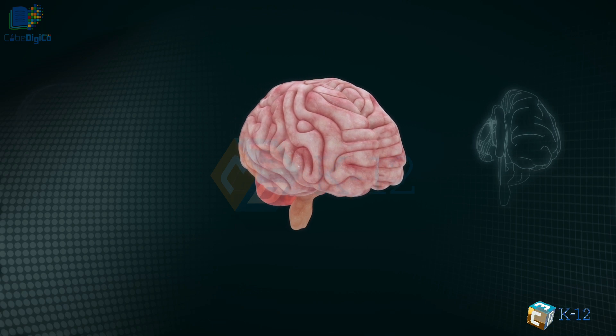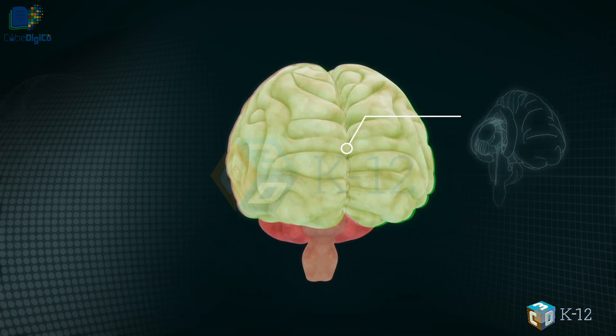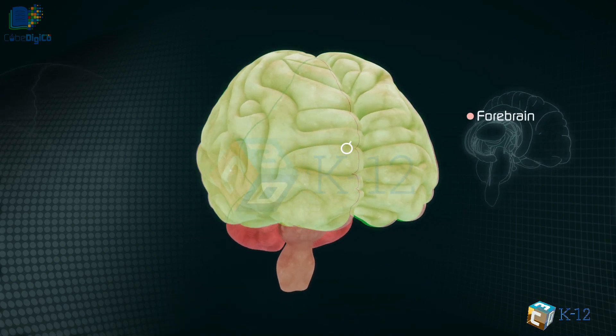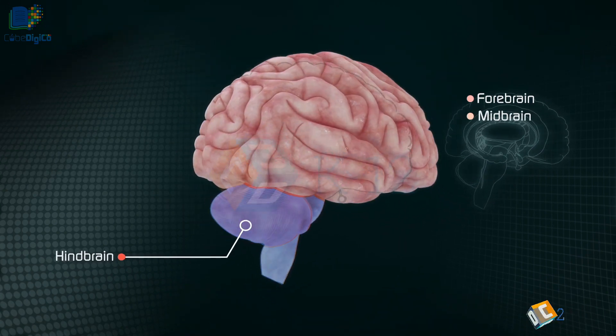The brain can be divided into three basic units: the forebrain, the midbrain, and the hindbrain.